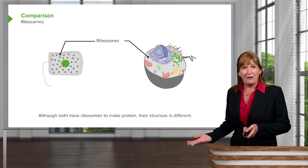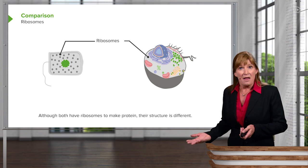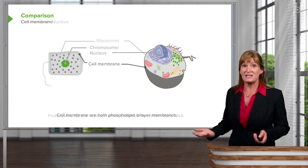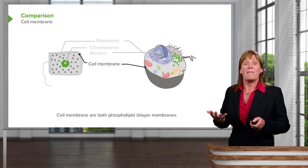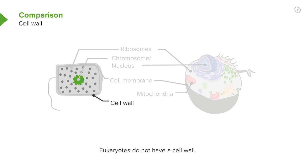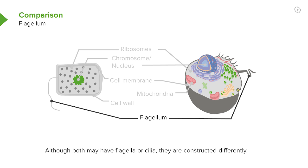Comparing prokaryotic and eukaryotic cells: they both have ribosomes, they both have nuclei, they both have cell membranes. Bacterial cells have cell walls, whereas eukaryotic cells generally do not. Plant cells have cell walls and fungal cells have cell walls; however, animal cells lack a cell wall entirely. Both cell membranes are composed of phospholipid bilayers.